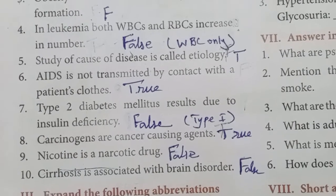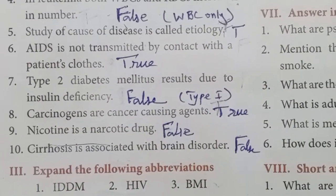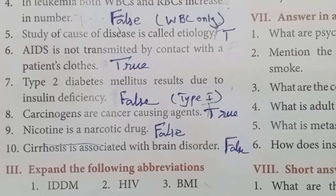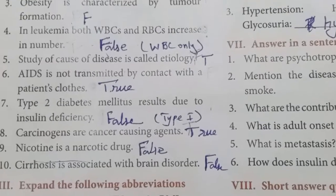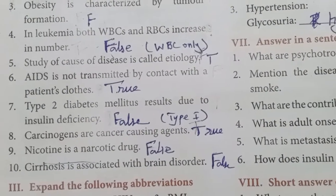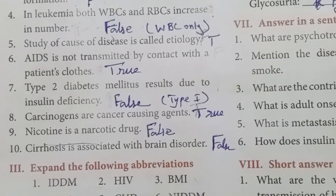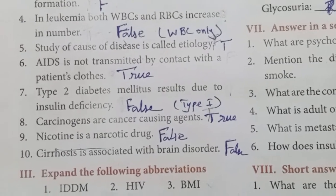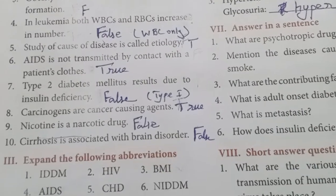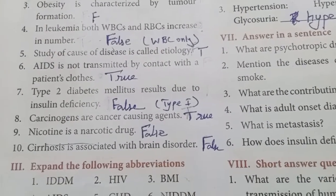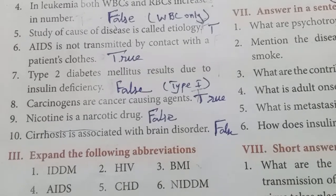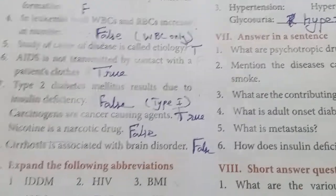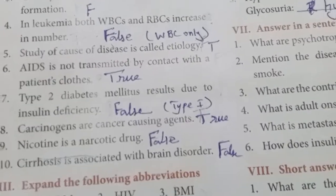'Type 2 diabetes mellitus results due to insulin deficiency' — this is false, because Type 2 diabetes mellitus results due to insulin resistance, not deficiency. 'Carcinogens are cancer-causing agents' — true. 'Nicotine is a narcotic drug' — false; nicotine is not a narcotic drug because the person using nicotine does not experience giddiness (narcosis). 'Cirrhosis is associated with brain disorder' — false, because cirrhosis is associated with the liver only; overdrinking alcohol leads to liver cirrhosis.